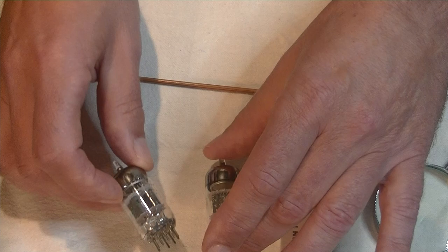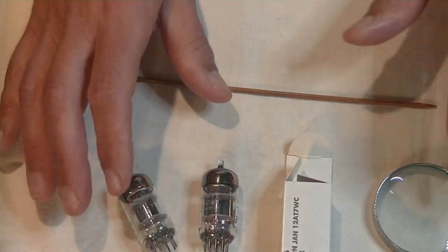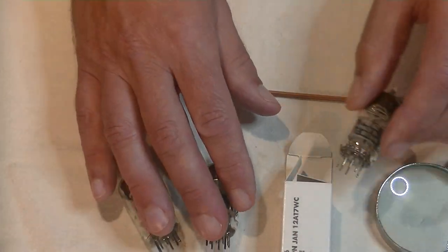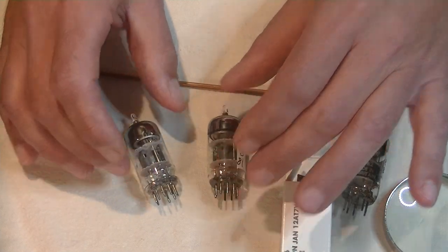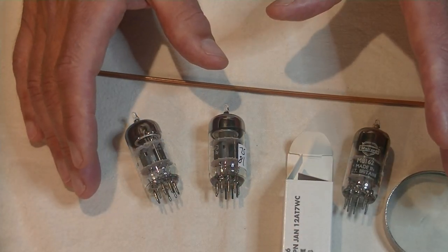So, there you go. Three great tubes, 12AT7 tubes, that could be subbed as a 12AX7.